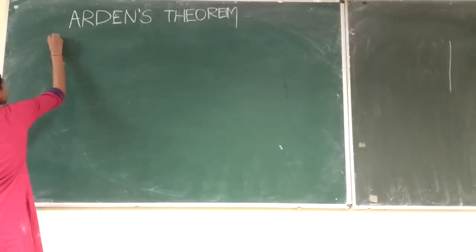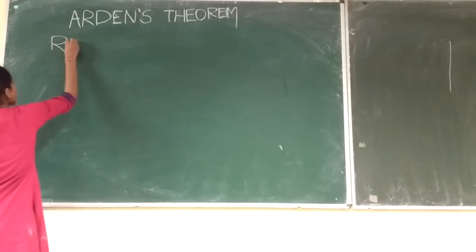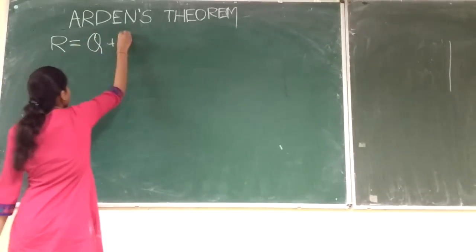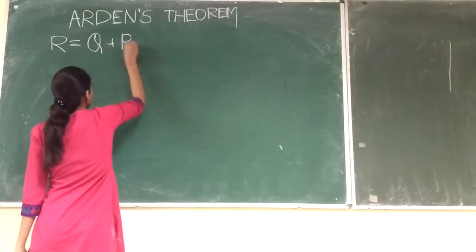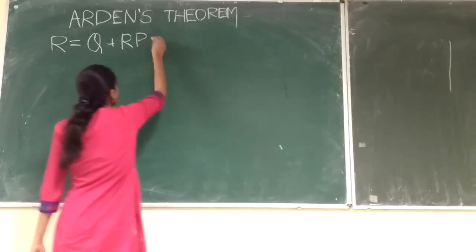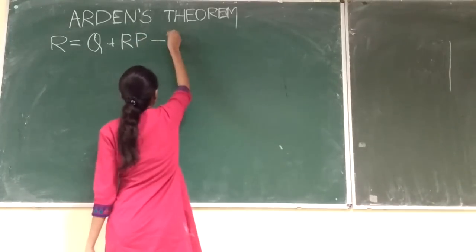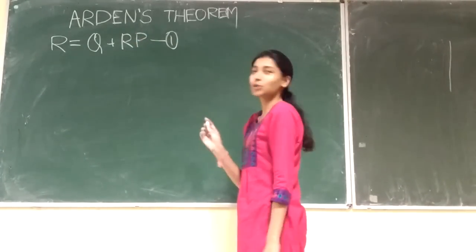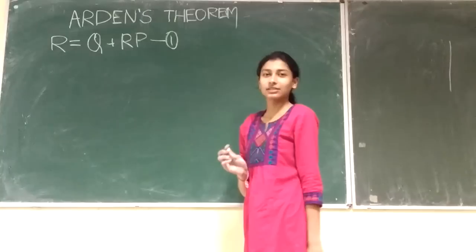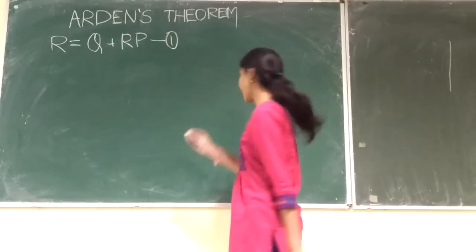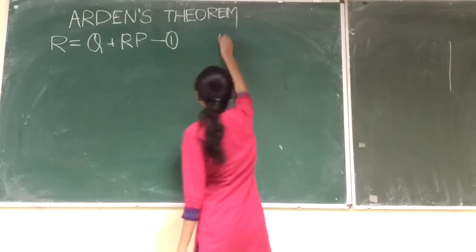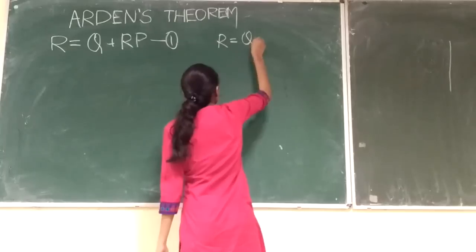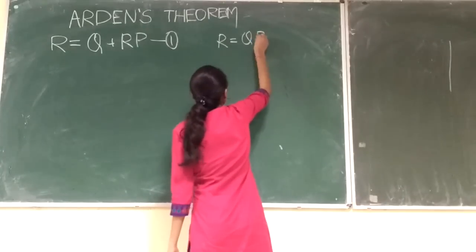So let's see what the equation is first: R = Q + RP. This is equation one, and we are going to prove that R = QP* is the only unique solution of this equation.